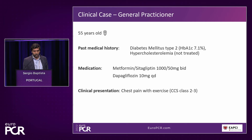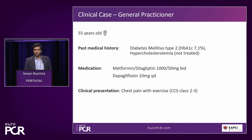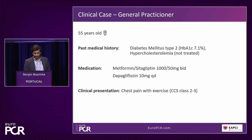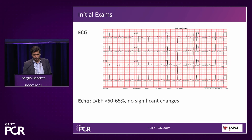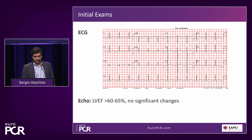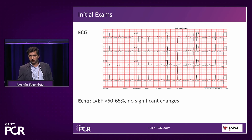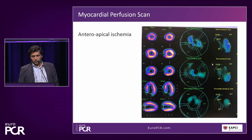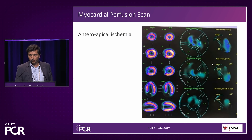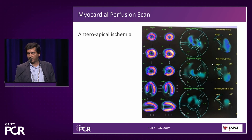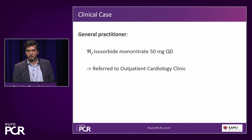She went to her GP with complaints of chest pain on exertion, classified as class 2–3. The GP asked for an ECG, which was basically normal, and an echo, which was also normal. The GP then asked for a myocardial perfusion scan — there is clearly ischemia in the apex and the inferior wall. With this in mind, the GP started some nitrates and referred the patient to the cardiology clinic.